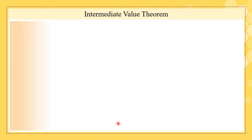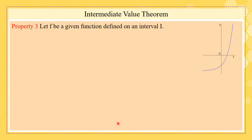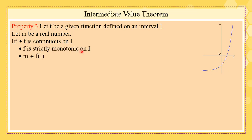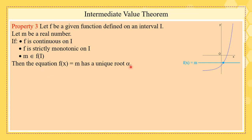Let's see the general result. If f is a function defined on an interval I, m is a real number, and f is continuous and strictly monotonic on I, and m belongs to f(I) — the range — then the equation f(x) = m has a unique root alpha. Here alpha plays the role of x.